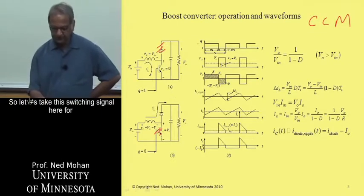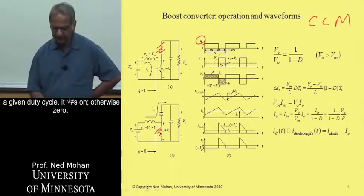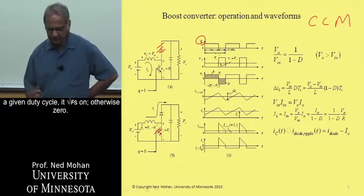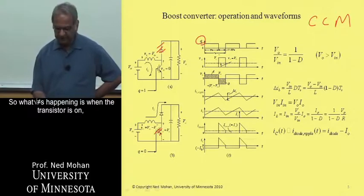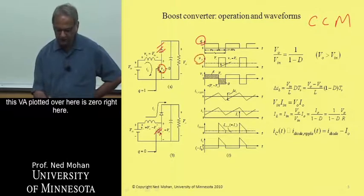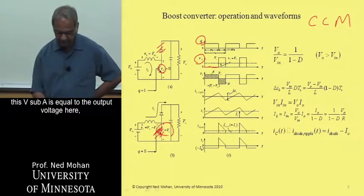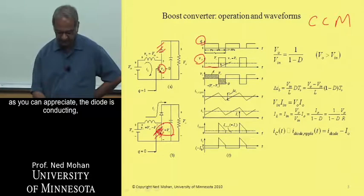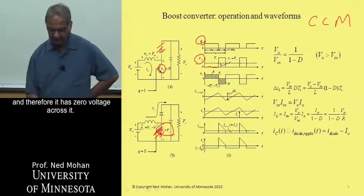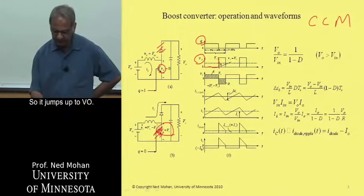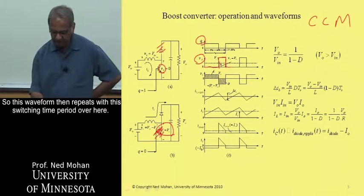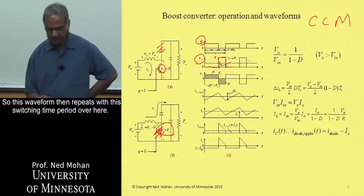Let's take this switching signal here for a given duty cycle. When the transistor is on, this VA plotted over here is zero. And when we turn off this transistor, this V sub-A is equal to the output voltage here. As you can appreciate, the diode is conducting, and therefore it has zero voltage across it, so it jumps up to VO. This waveform then repeats with this switching time period over here.